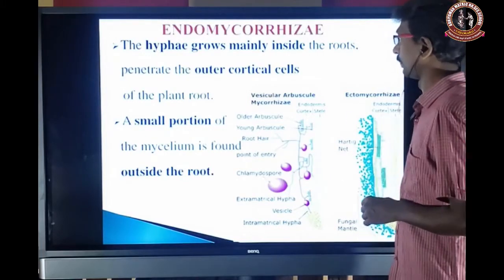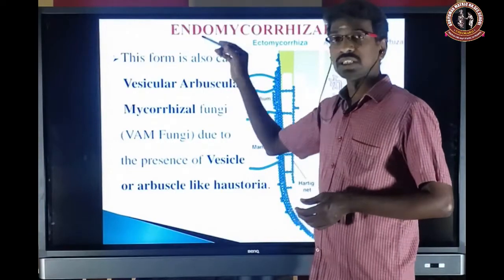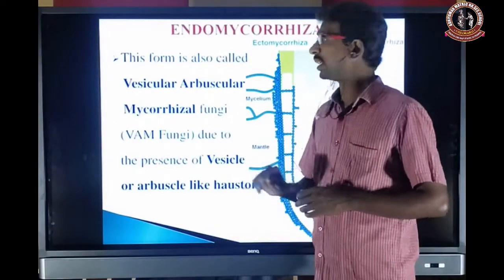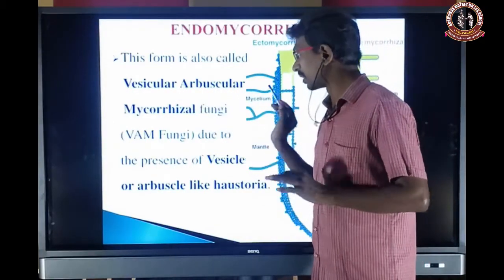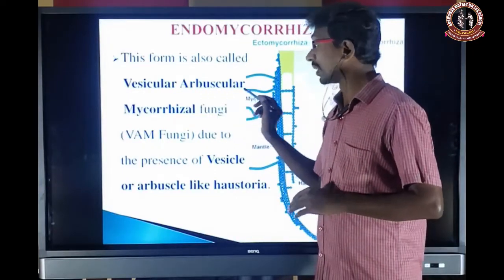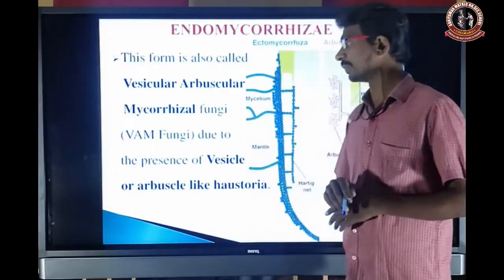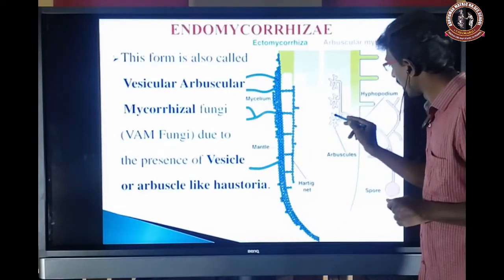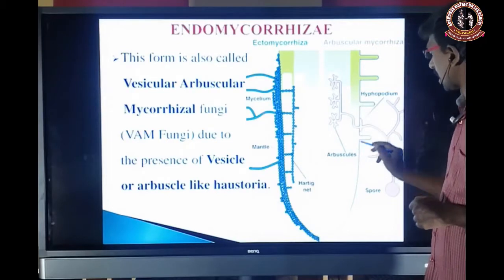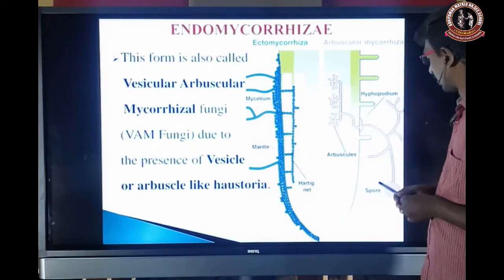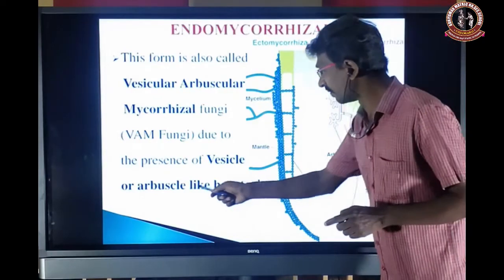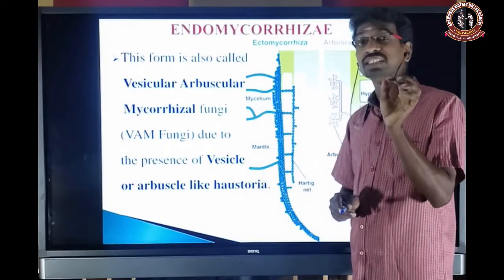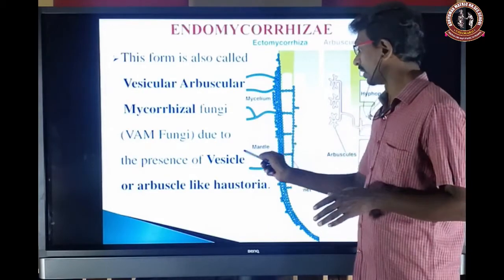Endomycorrhizal fungi are generally called VAM fungi — Vesicular Arbuscular Mycorrhizal fungi — due to the presence of vesicles and arbuscules. The finger-like projections present inside the cortical cell are called arbuscules, and a small sac-like structure also present inside the cortical cell is called the vesicle. The vesicle is more or less spherical.